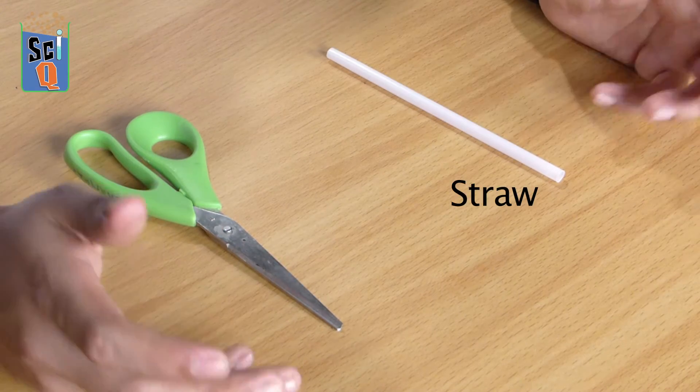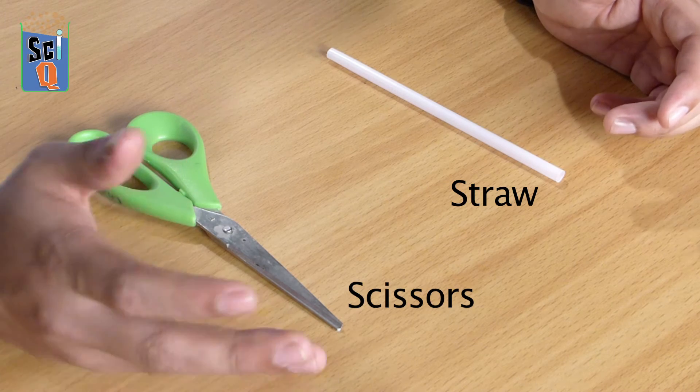What you're going to need for this is a straw and a pair of scissors. So kids I suggest you ask an adult to help you out with this.